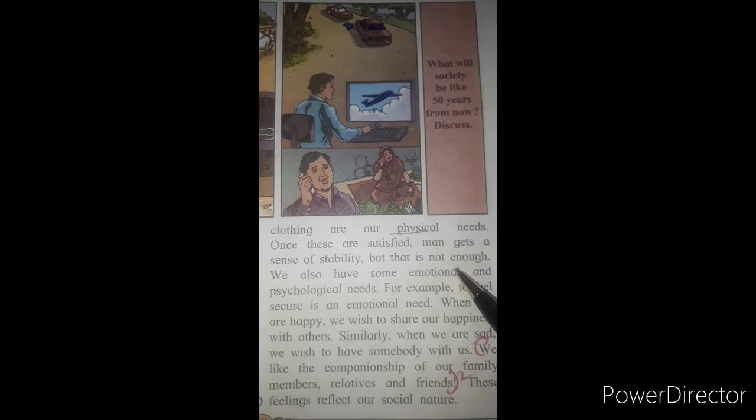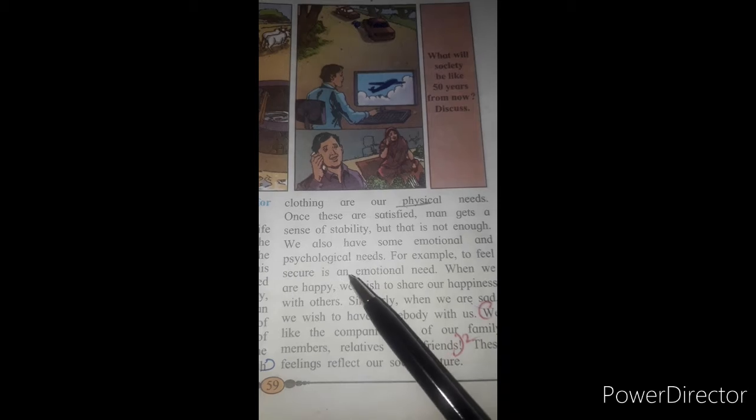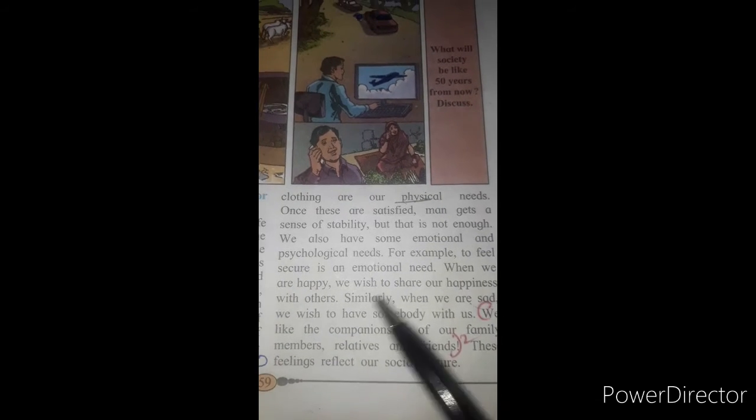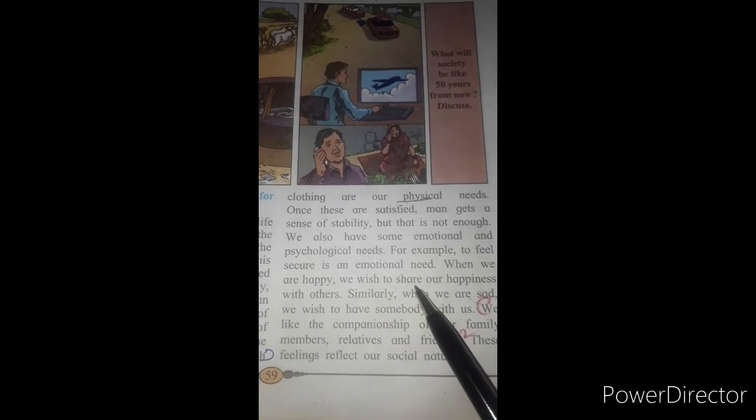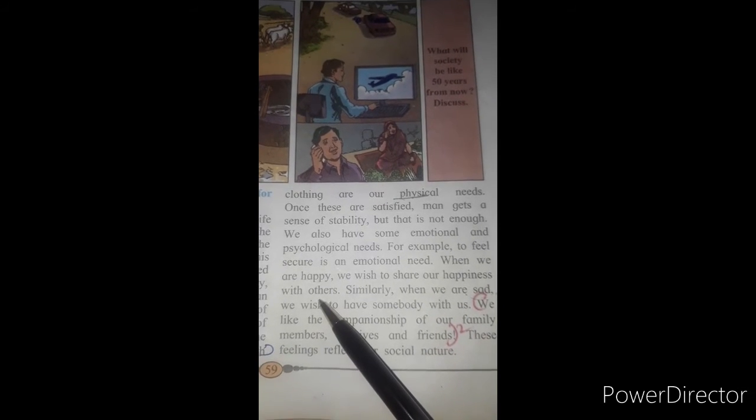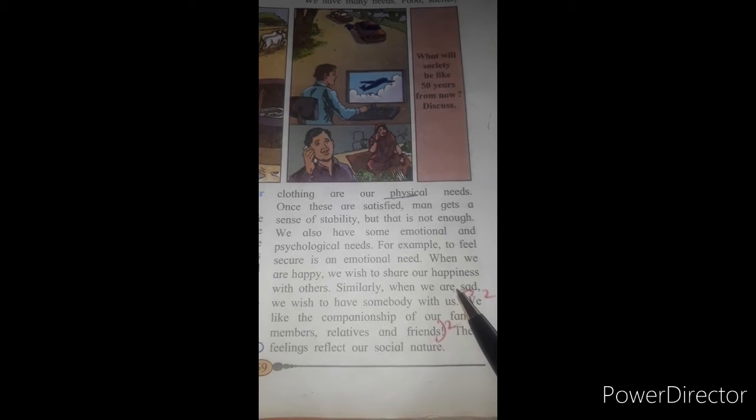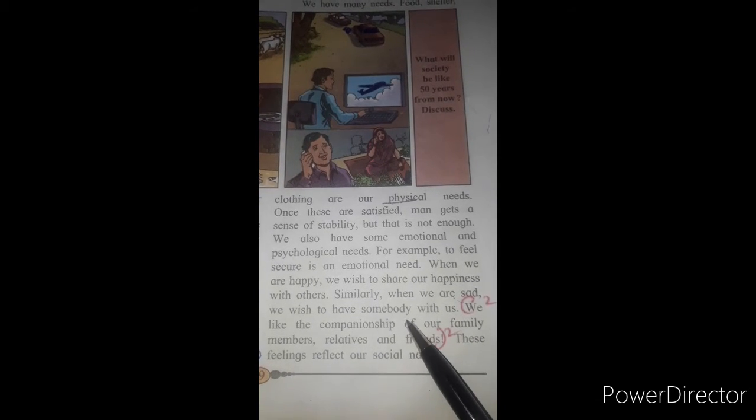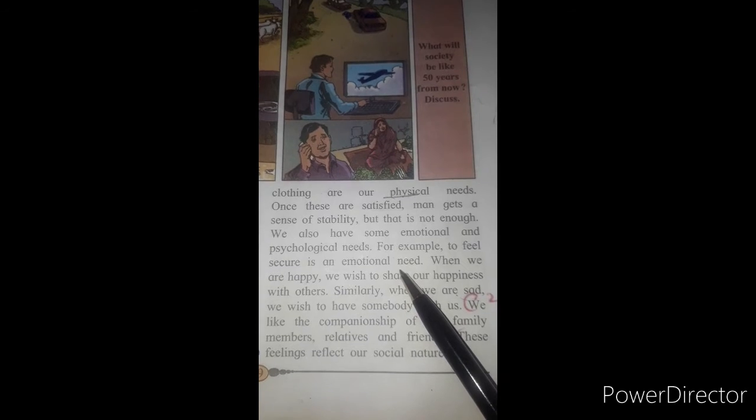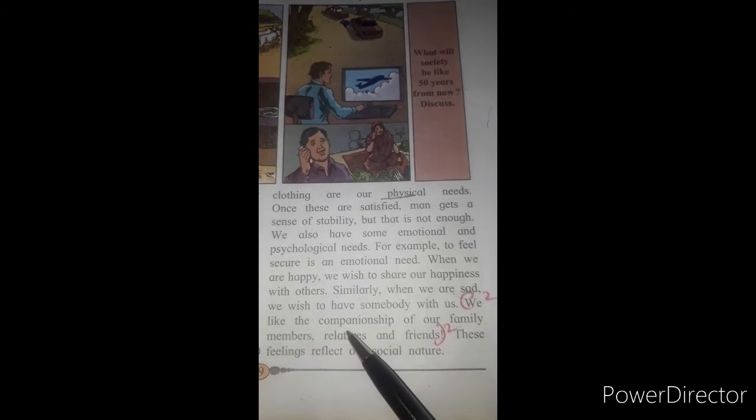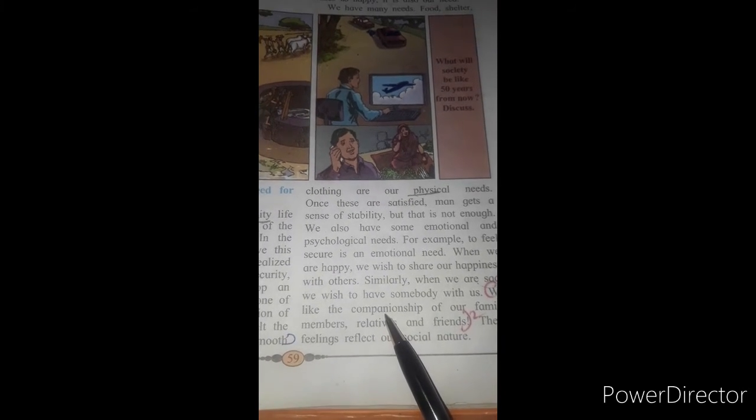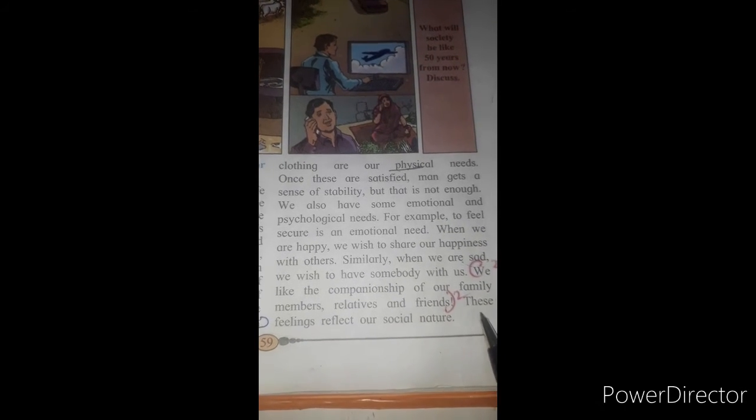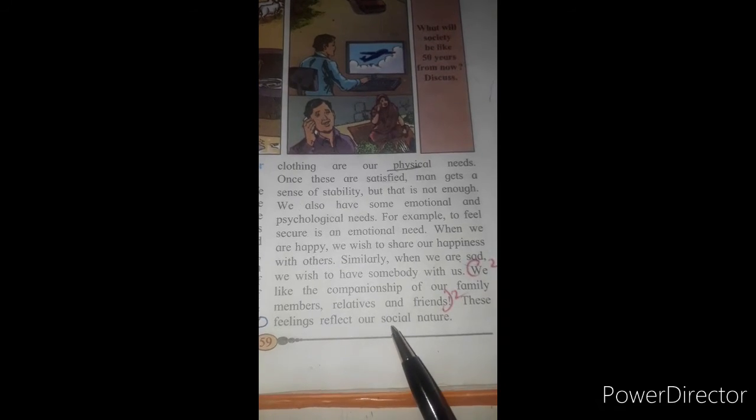Nowadays, we also have some emotional and psychological needs. What is our emotional need? Feel secure. When we are happy, what we do? We share our happiness with others. Similarly, when we are sad, we wish to have somebody with us. This is our emotional needs. We like companionship. Companionship means a friendly relationship with family members, relatives and as well as with friends. These feelings are our social nature.